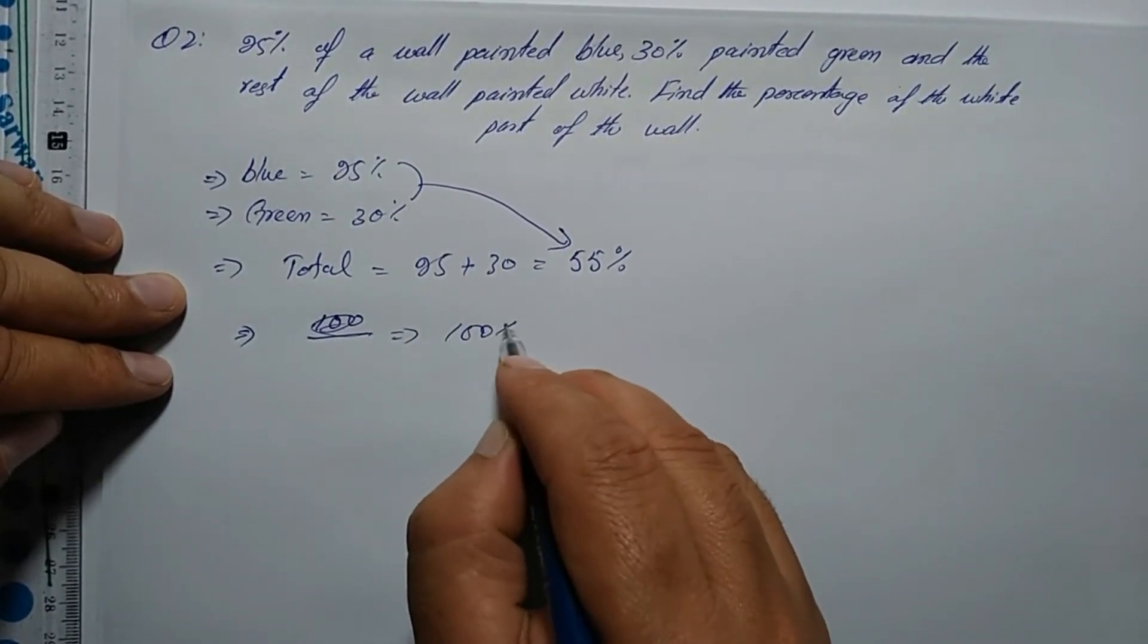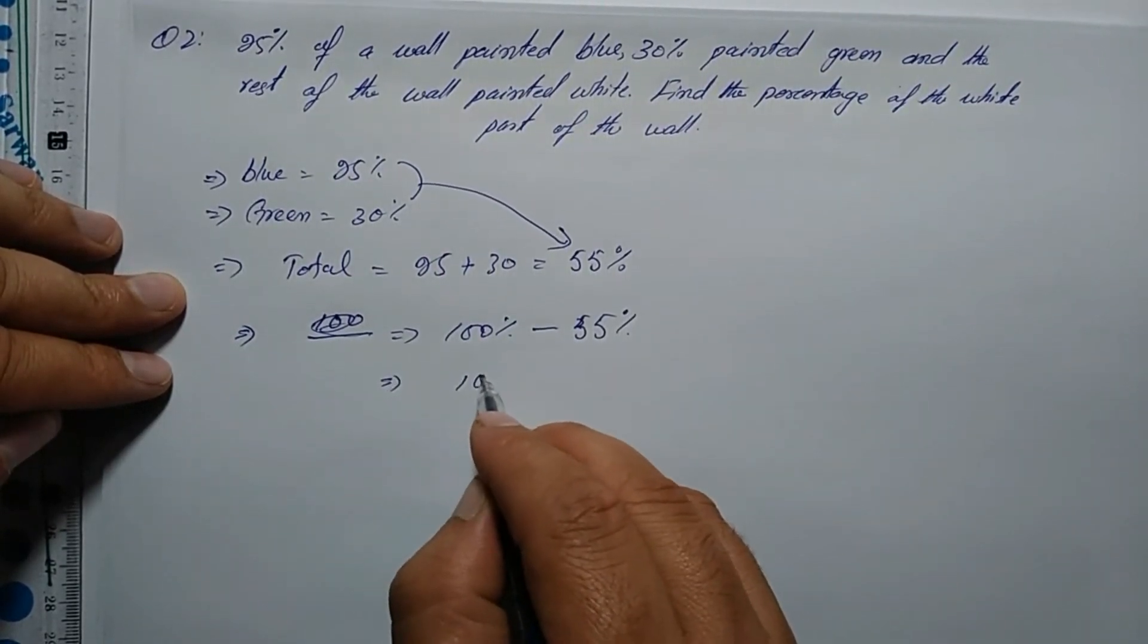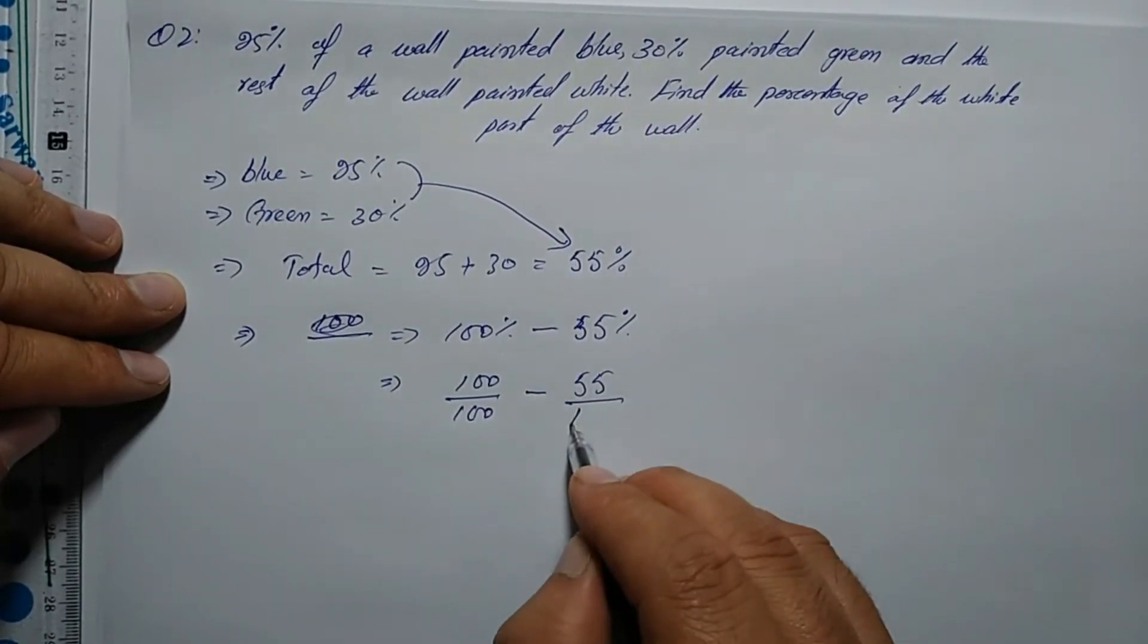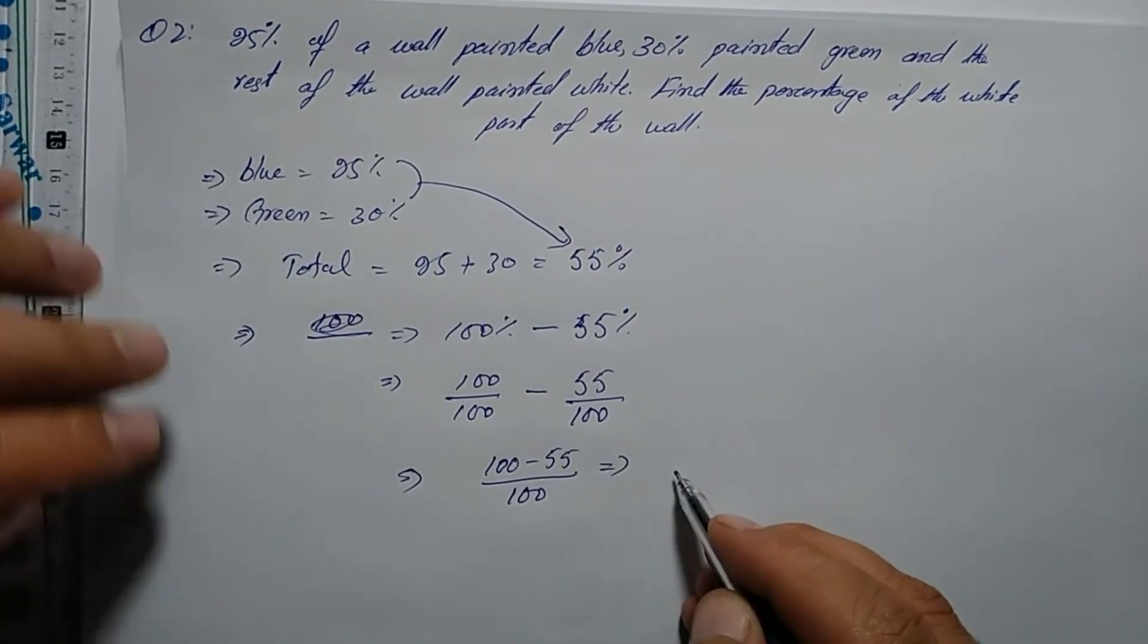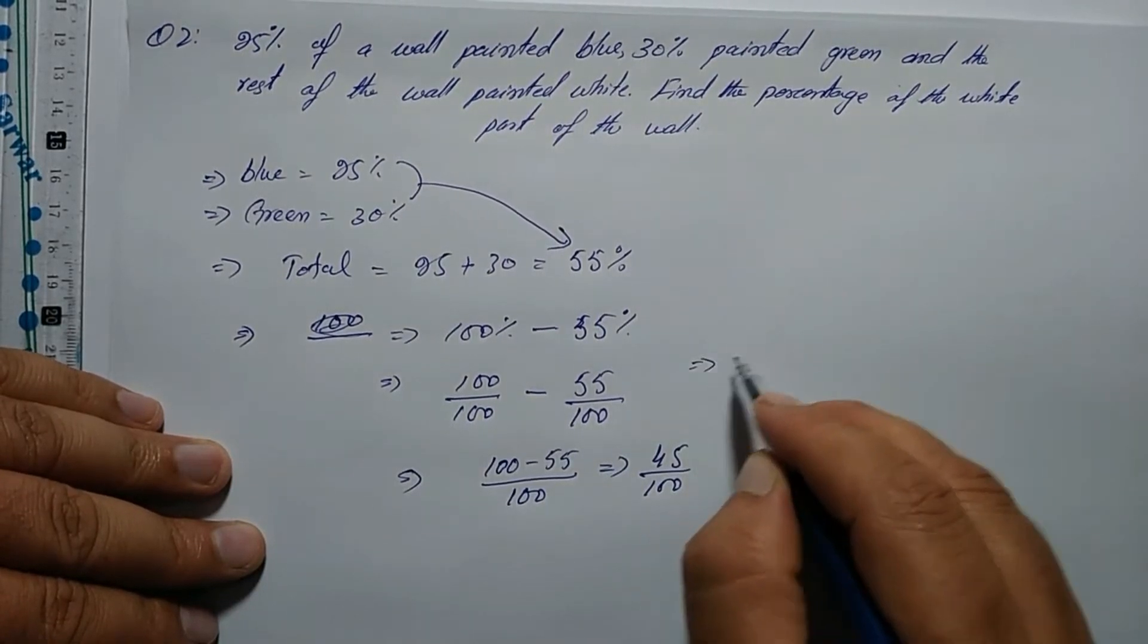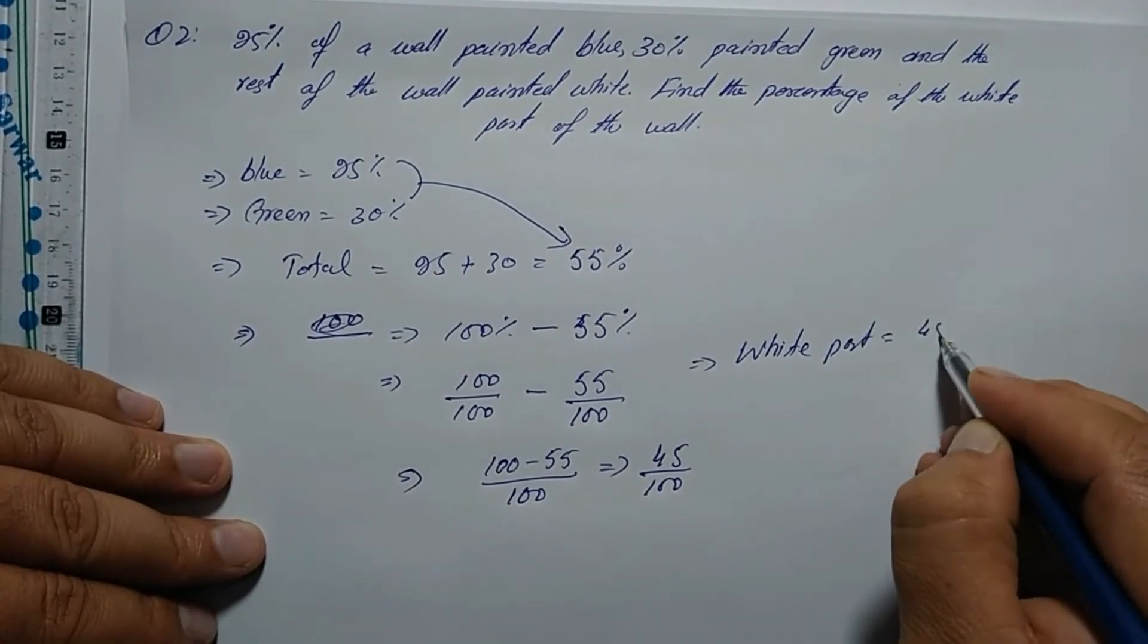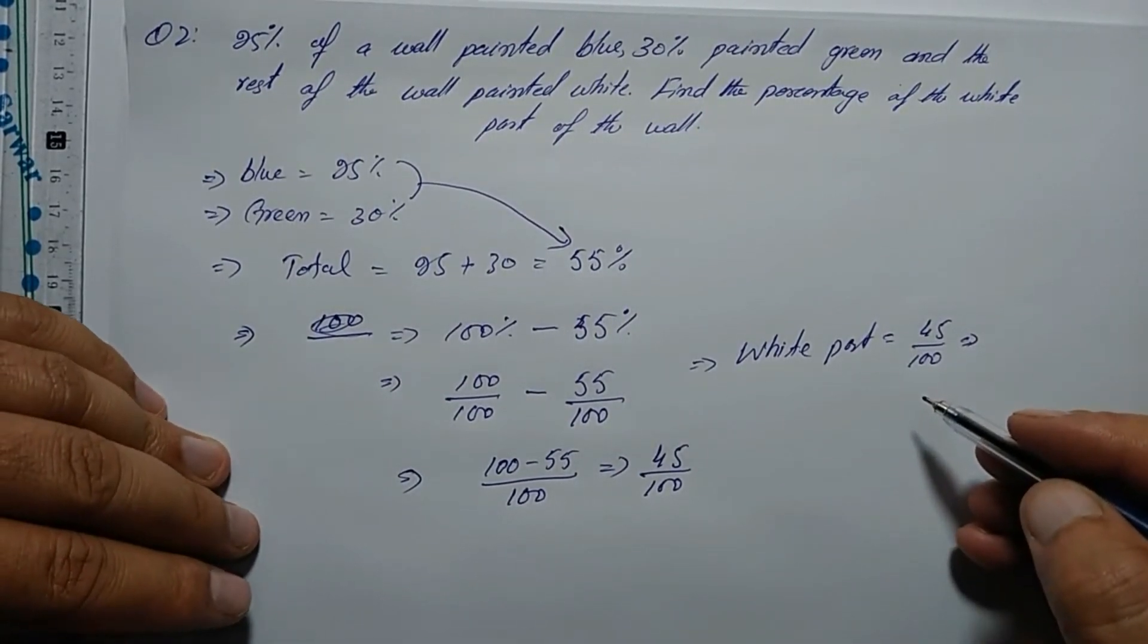100 percent minus 55 percent equals 45 over 100. This is the white part, which equals 45 percent. When you have 100 in the denominator, you can convert it to percentage directly.